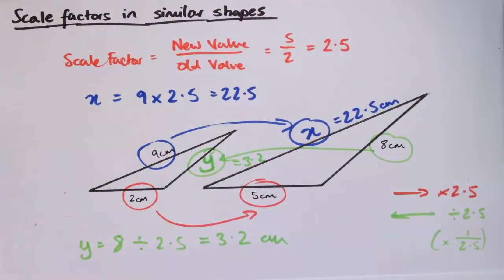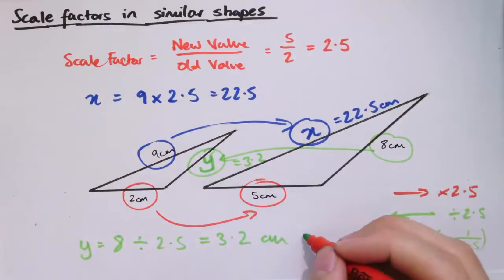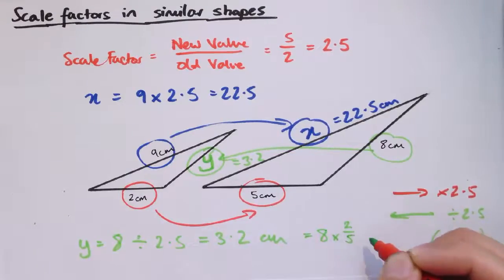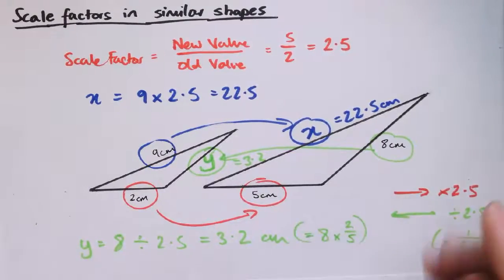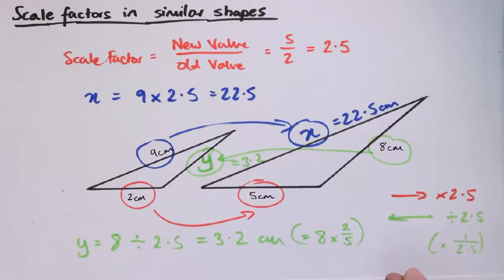You could, if you like, have said, okay, well, work out the scale factor separately. So if you're just going in the other direction, the scale factor, rather than being five over two, would be two over five. So that's actually the same as saying, that's exactly the same as saying eight times two fifths. Or we can just use the reverse scale factor, whichever you prefer. You need to be able to be sort of fluent in doing it both ways.